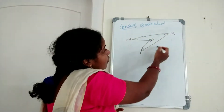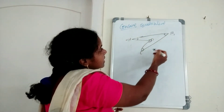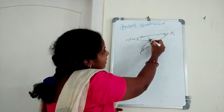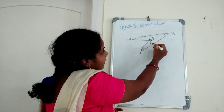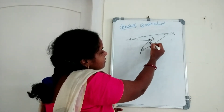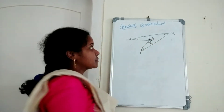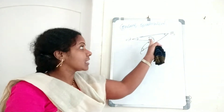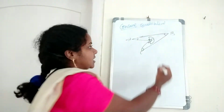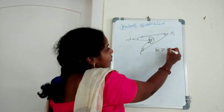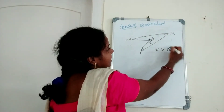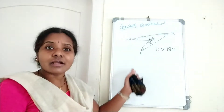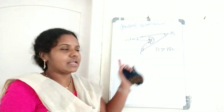Here, which interior angle is more than 180 degrees? It is angle D. Suppose we draw a straight angle — this part and this part is the excess part. So one of the interior angles is more than 180 degrees; angle D is more than 180 degrees here. So this quadrilateral is called a concave quadrilateral.